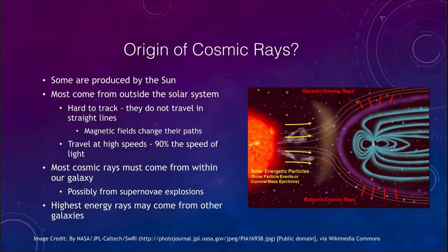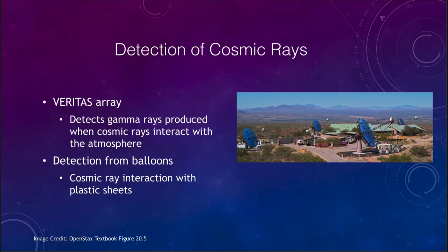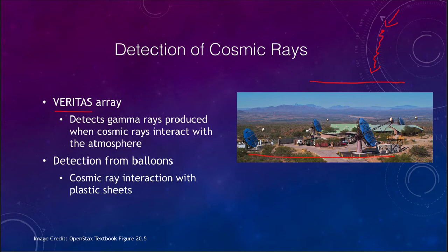How do we go about detecting these? One method is the VERITAS array. It detects not the cosmic rays themselves — it's actually on the surface of the Earth, so the cosmic rays are not going to make it down to the surface. But when those cosmic rays strike particles in the Earth's atmosphere, that produces gamma rays, which can then come down to the Earth and be detected. These can detect those flashes of gamma radiation that come down from these particles and can then be traced back to learn more about the cosmic rays.